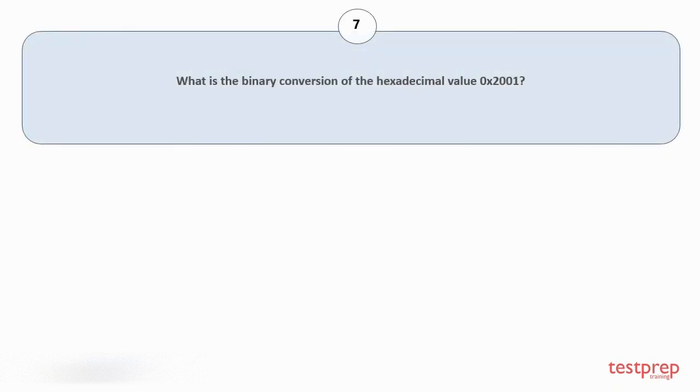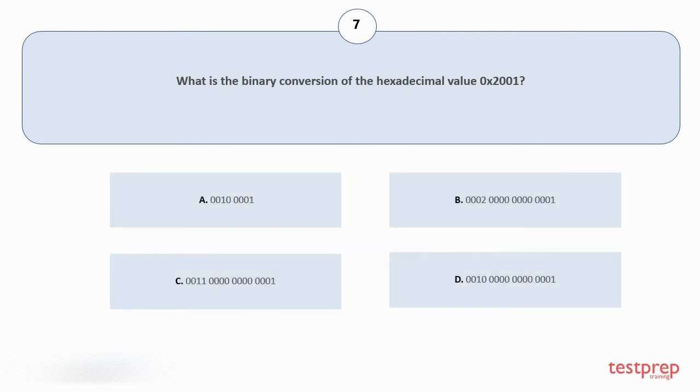Question number 7, What is the binary conversion of the hexadecimal value 0x2001? The correct answer is option d.